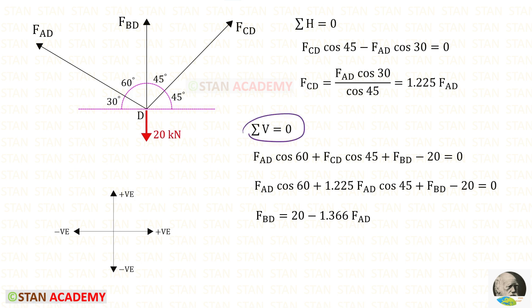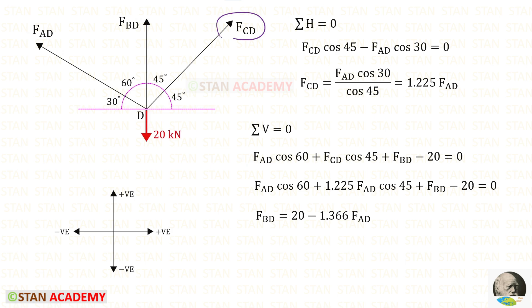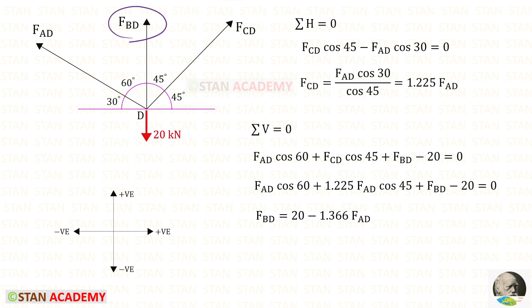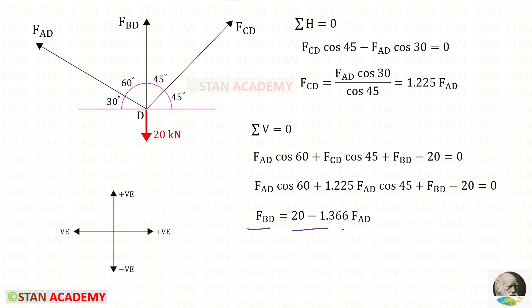Now let us apply sigma V = 0. We have to resolve FAD in the vertical direction. To keep it vertical, we need 60 degrees, so with FAD we multiply cos 60. Since it is acting upwards, it will be positive. FCD is also inclined; to keep it vertical we need 45 degrees, so with FCD we multiply cos 45 — since it is acting upwards, it will be positive. FBD is acting upwards so it will be positive. This load is acting downwards so it will be negative. We need to find FBD in terms of FAD.